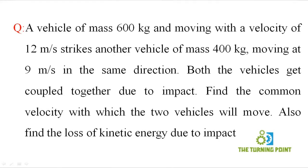A vehicle of mass 600 kg moving with a velocity of 12 m/s strikes another vehicle of mass 400 kg moving at 9 m/s in the same direction. Both vehicles get coupled together due to impact. Find the common velocity with which the two vehicles will move, and also find the loss of kinetic energy due to impact.